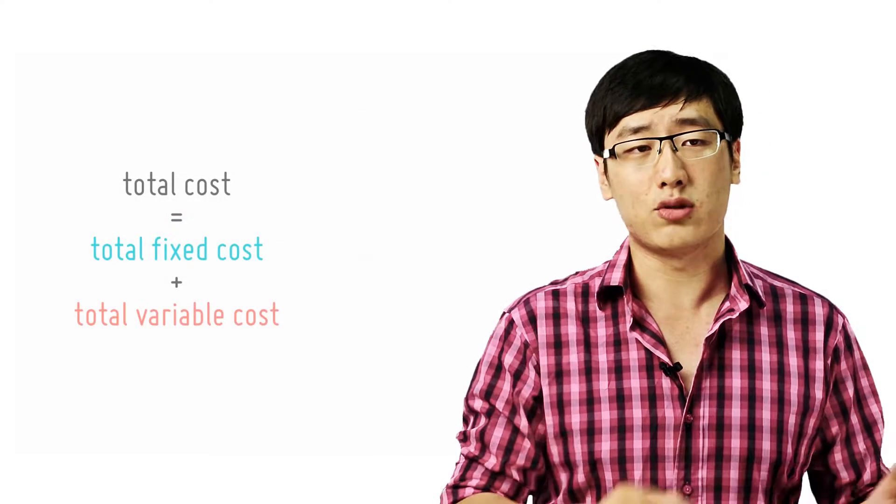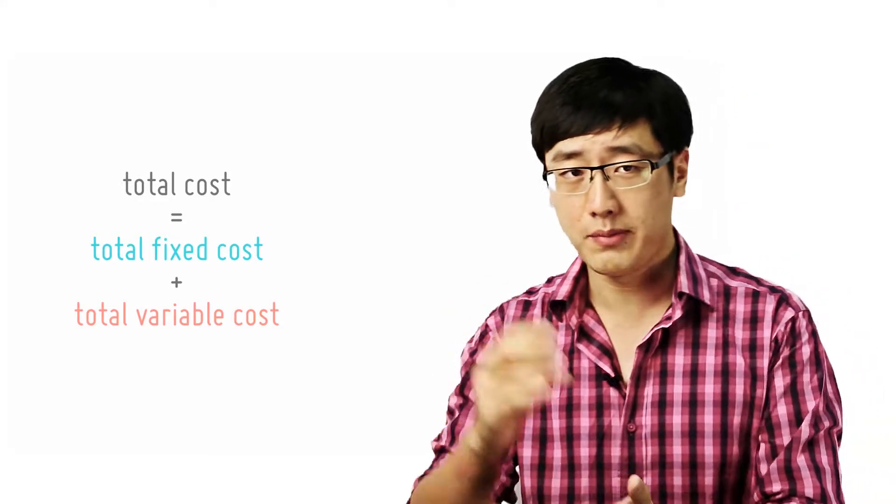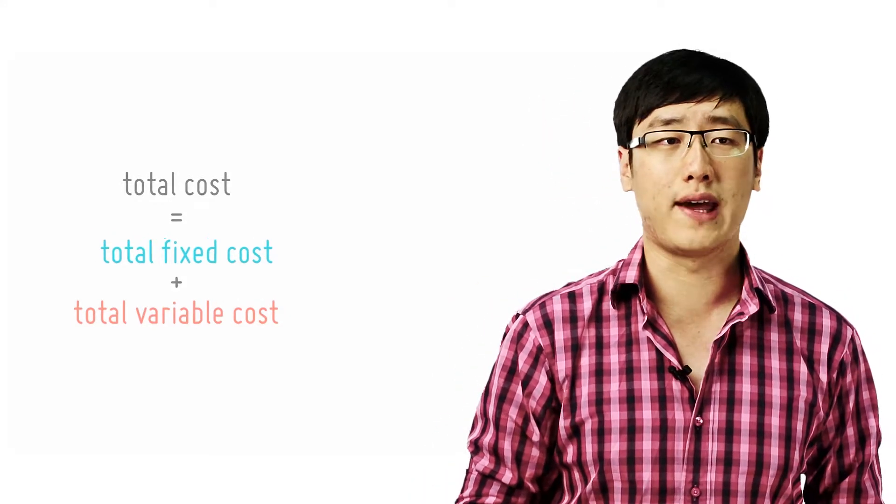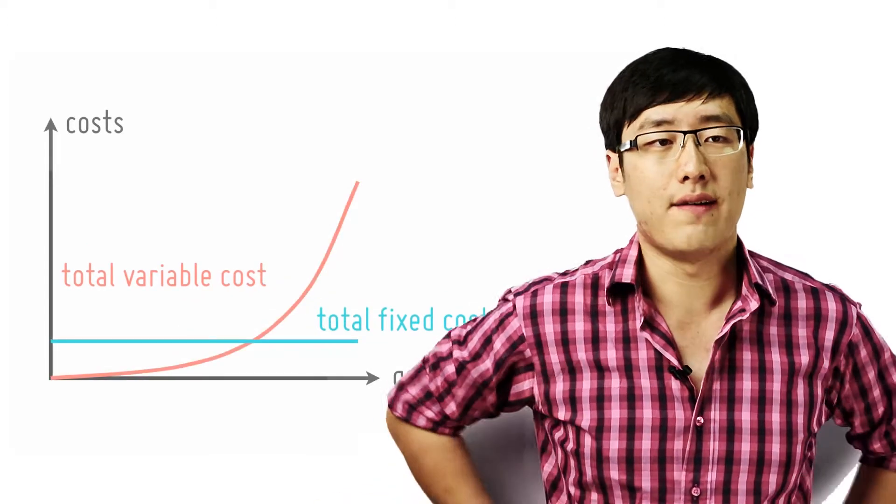Total cost is simply total fixed cost plus total variable cost. To examine the shape of the total cost curve, we have to look at the two components, fixed and variable.